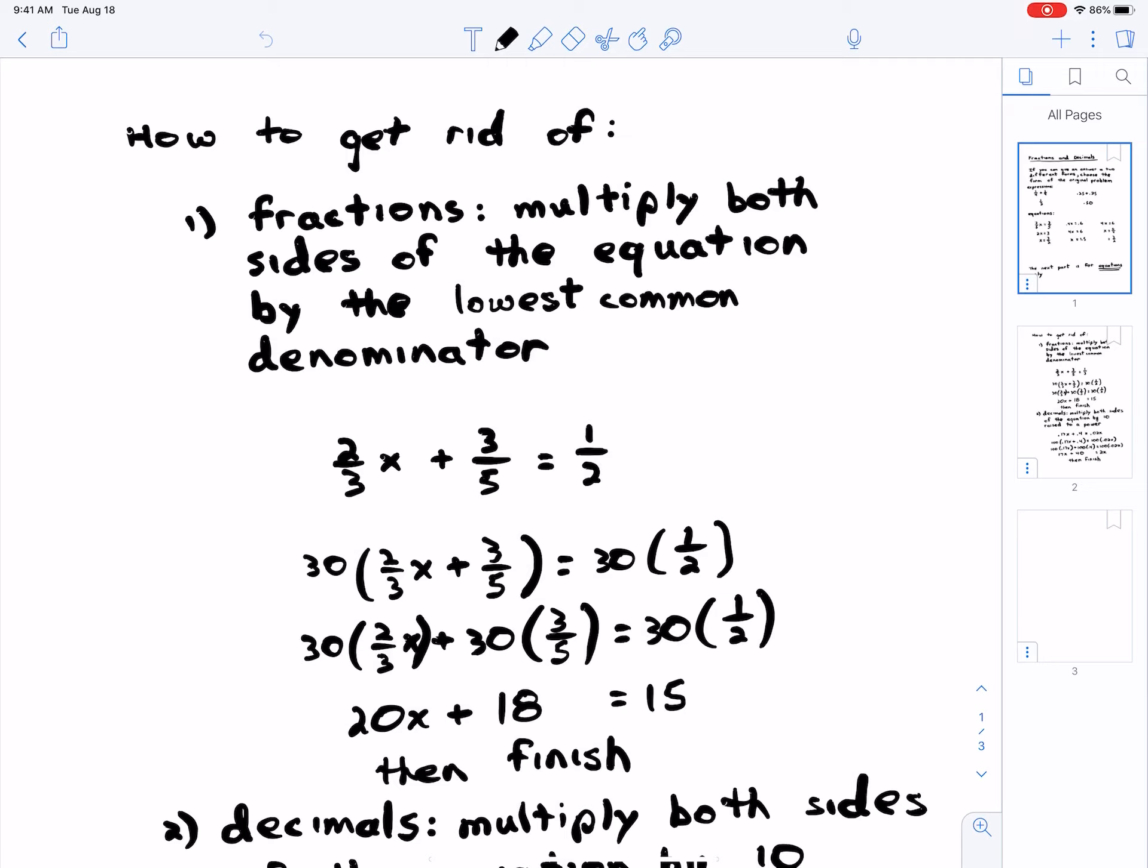And then the 3 cancels with the 30 to give us 10 times 2, which is 20. So again, what's happening here? The 3 is canceling with the 30 to give us 10, and that times 2 will give us 20. When I say you're getting rid of fractions, what am I saying you're getting rid of? You're getting rid of the denominator. And then on the second one, 5 cancels with the 30 to give us 6, and then the remaining 6 times 3 is 18. And on the other side, 2 cancels with the 30 to give you 15, and 15 times 1 is 15. Then you just finish off the problem. We'll get to solving equations later. I just want to talk about getting rid of fractions and decimals right now.